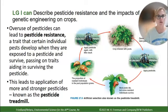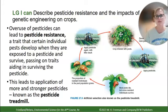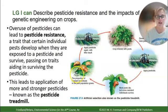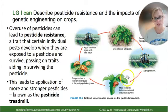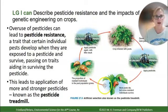The pesticide treadmill works as follows: when a pesticide is sprayed on a field, most pests die but some resistant ones do not. The resistant individuals breed, passing resistant genes to their offspring. The farmer then has to spray a more powerful pesticide, which kills most — but a few survive through genetic mutation, passing stronger DNA to their offspring. This cycle repeats continuously, which is why it is called the pesticide treadmill.